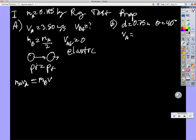So VB final is equal to MAVA over MB. And since MB is MA over two, that gives me two VA. So then the velocity is seven meters per second.